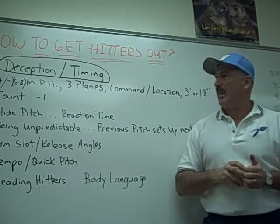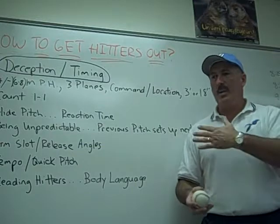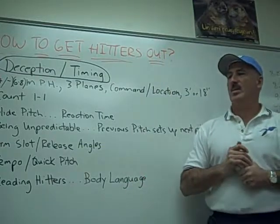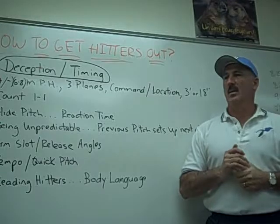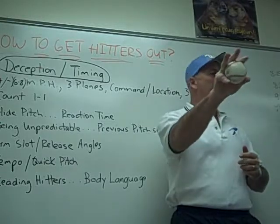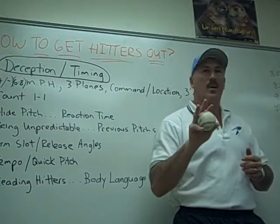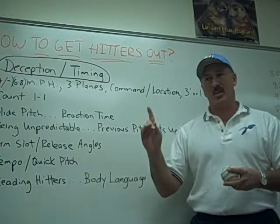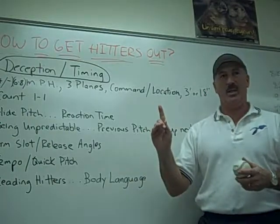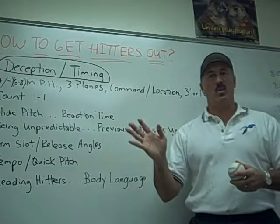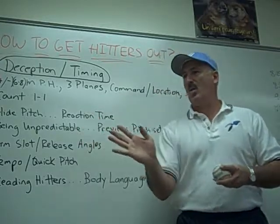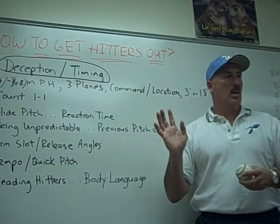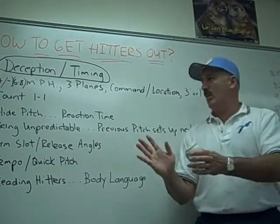Up and in, you add 5. Down and away, minus 5. Why is that so important? Even though I haven't done anything with pitch velocity, I have done it by where I throw the pitch. That's how we get hitters out — we want to make sure they're not on time. You can only be on time one time, 100% of the time, and that's only one place.